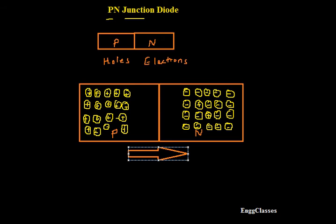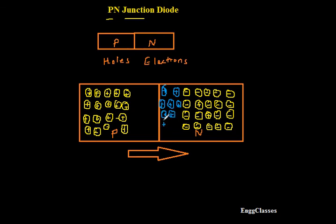As they move, they start getting accumulated near the junction — the layer formed when P-type and N-type are combined chemically. So holes start getting accumulated here near the junction. Similarly for electrons: there is a flow from high concentration at N-type to low concentration at P-type, so electrons start moving from N-type towards P-type.